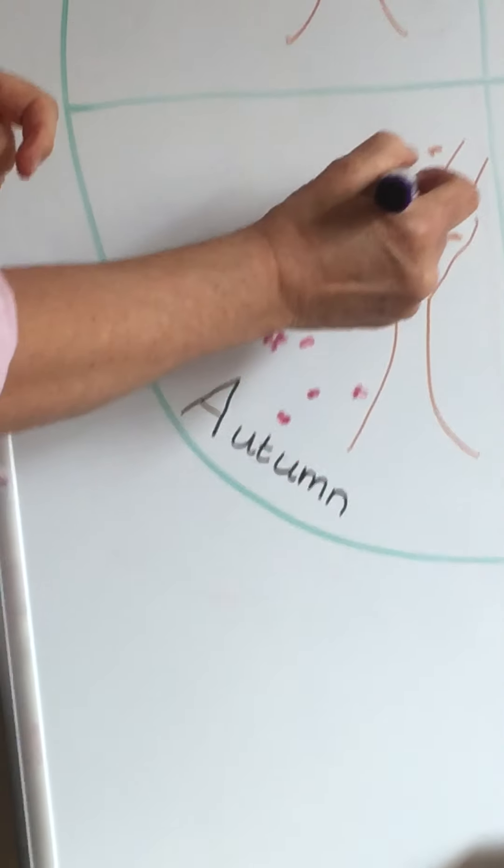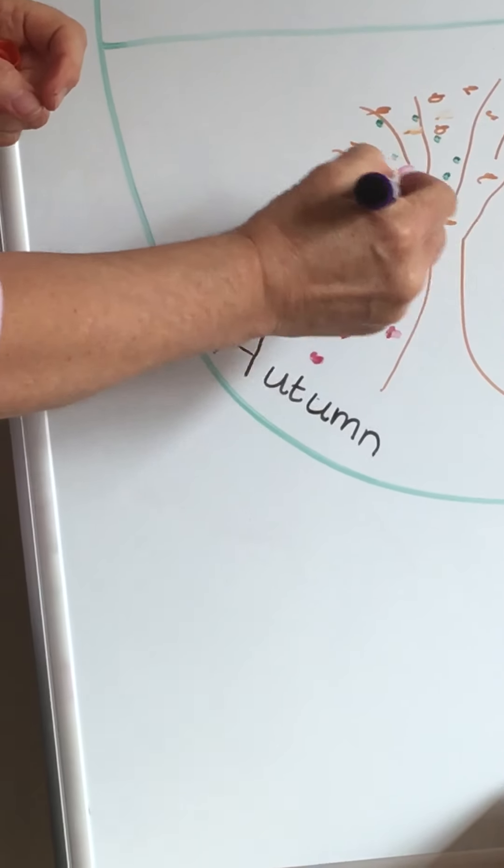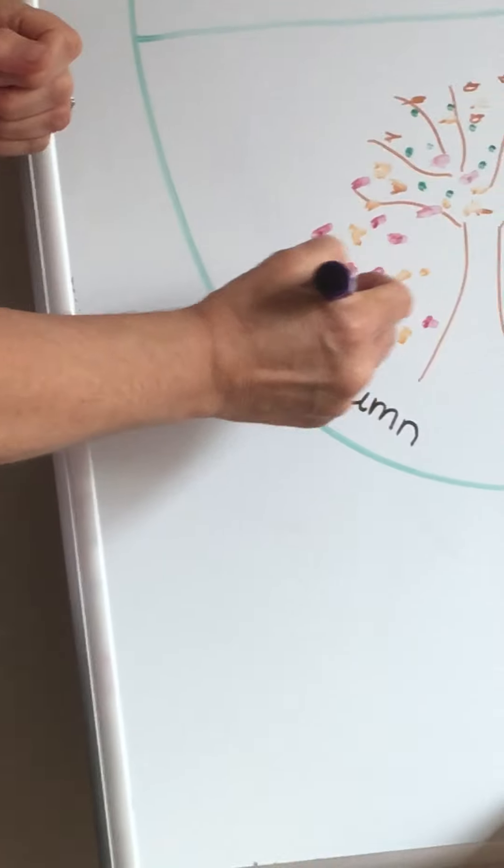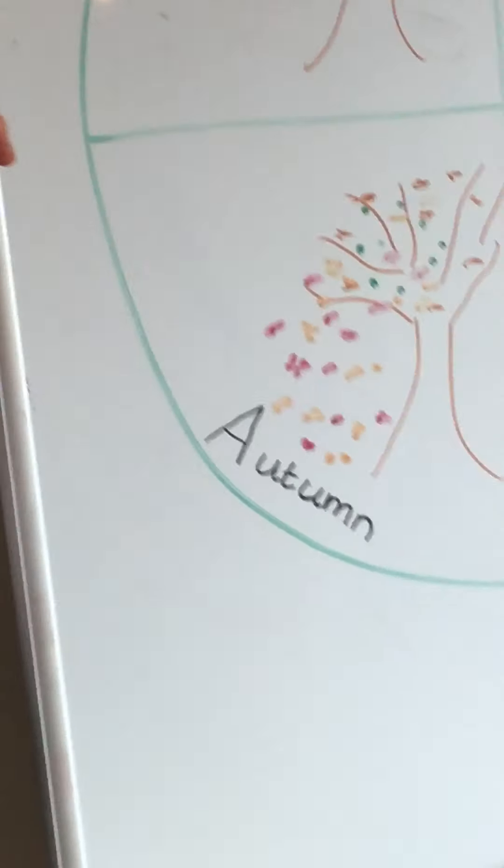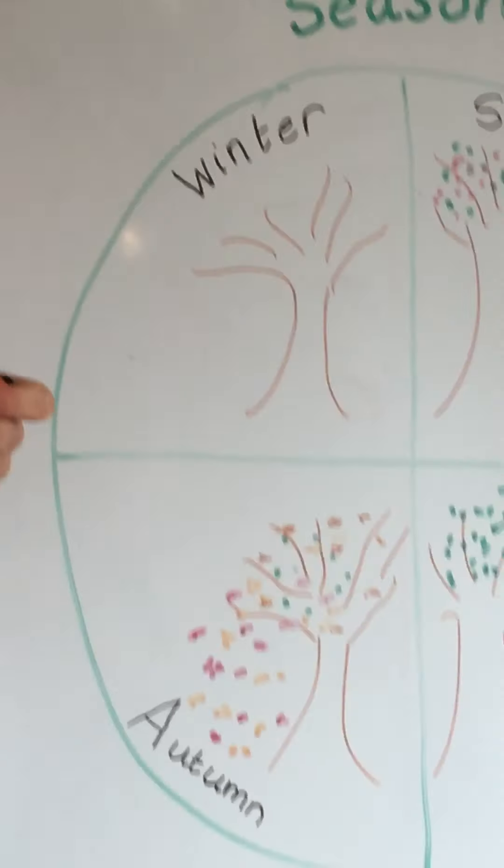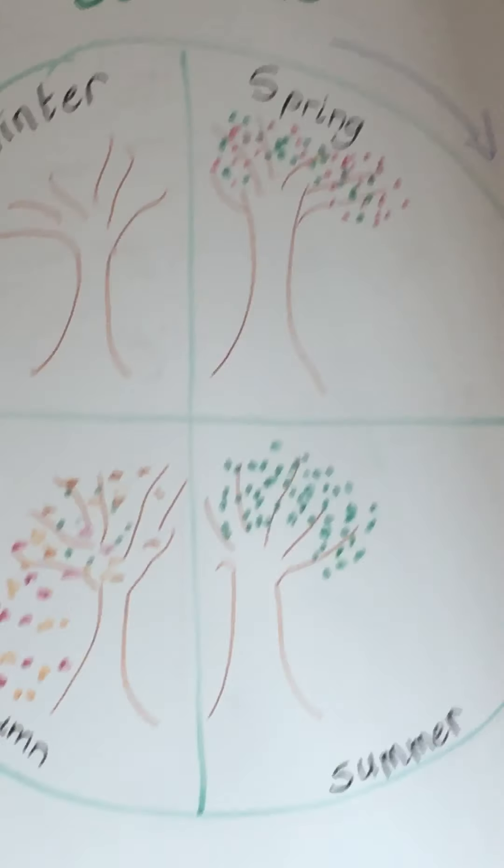And they've started to fall off as well. And orange. Oh that's not a very good orange Mrs Parker. There. There's my autumn tree. Hopefully yours looks a bit like that.